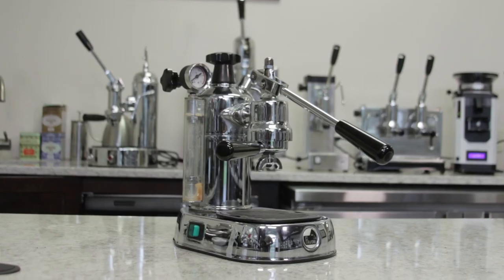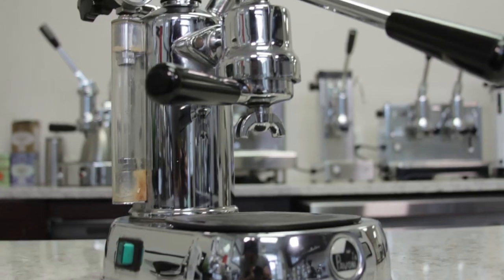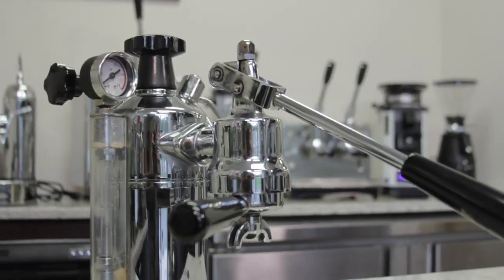So we mentioned the Bezzera Strega. That has a huge boiler, a huge group head. That's going to give you the best out of the lever machines in the home environment. But Electra also makes a very good machine. Another one that I didn't mention before is the Pavoni machines, which are also a non-spring piston.